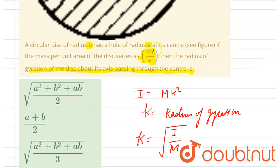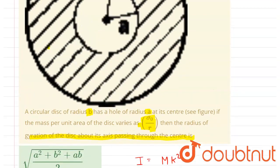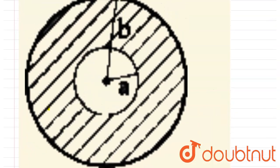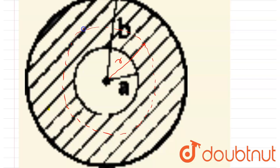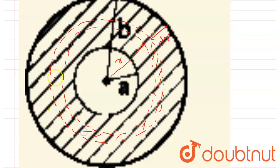Here the mass per unit area varies as sigma₀ divided by r. We need to take an element at a distance r. Since the mass per unit area is varying, let us take a ring element at a distance r with thickness dr. The area of this ring can be calculated using length times width.